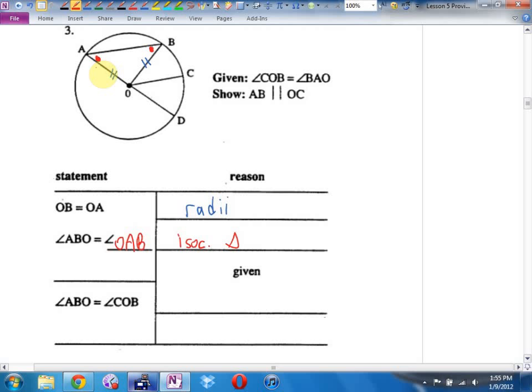What's the reason that they gave me for the next thing? What's the reason that they gave me for the next line? Given. What's the given they gave me? That goes here. Angle COB equals angle BAO. Let's label that. So, angle BAO, this one. I'll put a little X there now. Let's make a little neat X. Is the same as angle COB. Those two angles are the same. Now what?